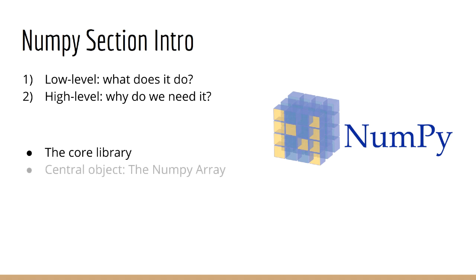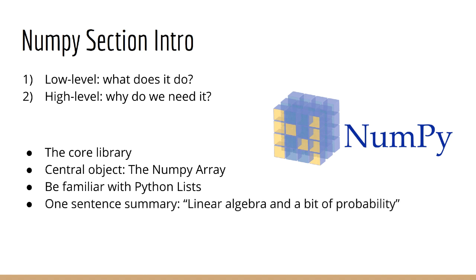The central object in the NumPy library is the NumPy array. Since in this course I'm assuming you have some level of familiarity with programming, then that means you know what an array is. At the very least, you should be comfortable with Python lists, which more or less behave like arrays, at least for our purposes. If I had to describe NumPy in one sentence, I would say it's a library for linear algebra and a bit of probability.